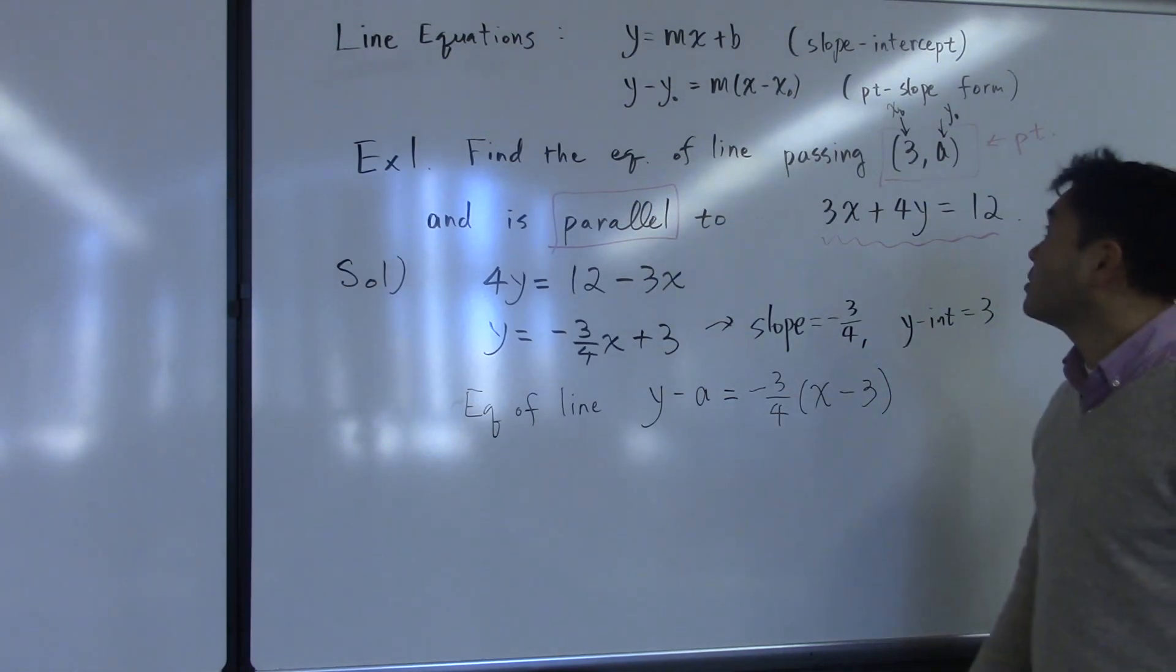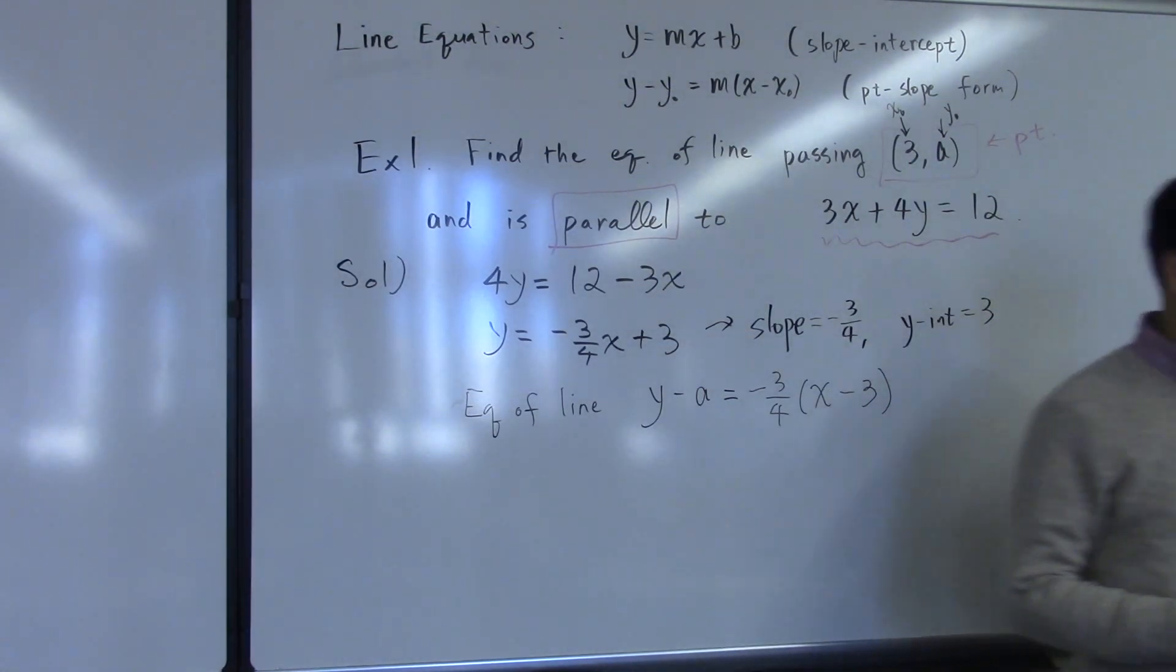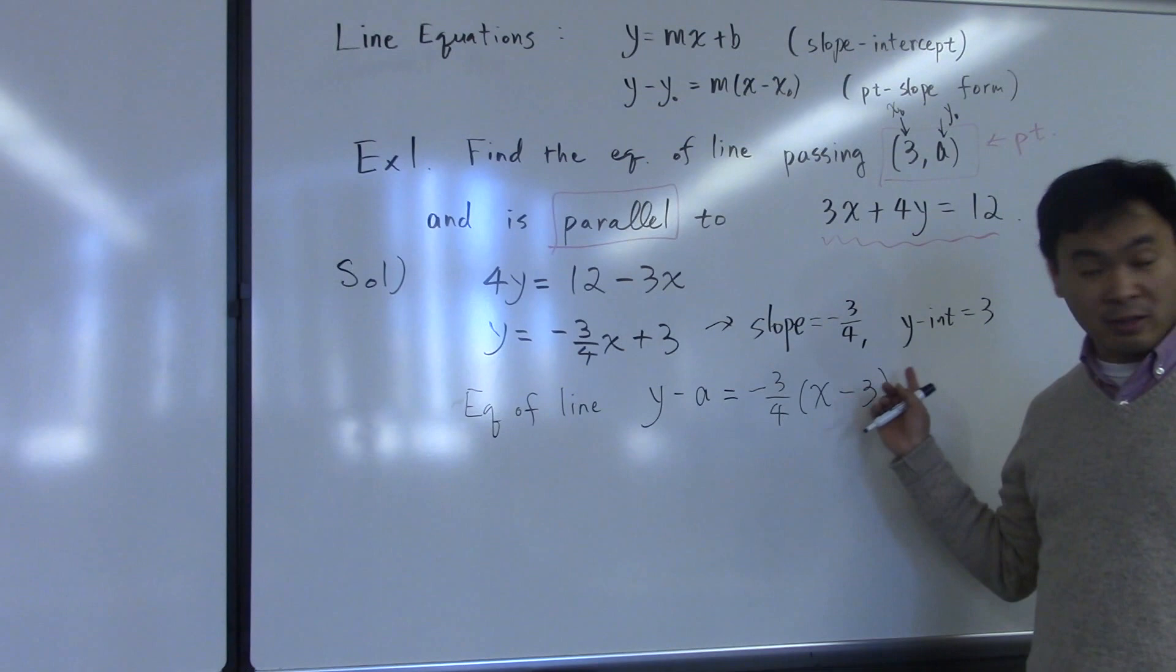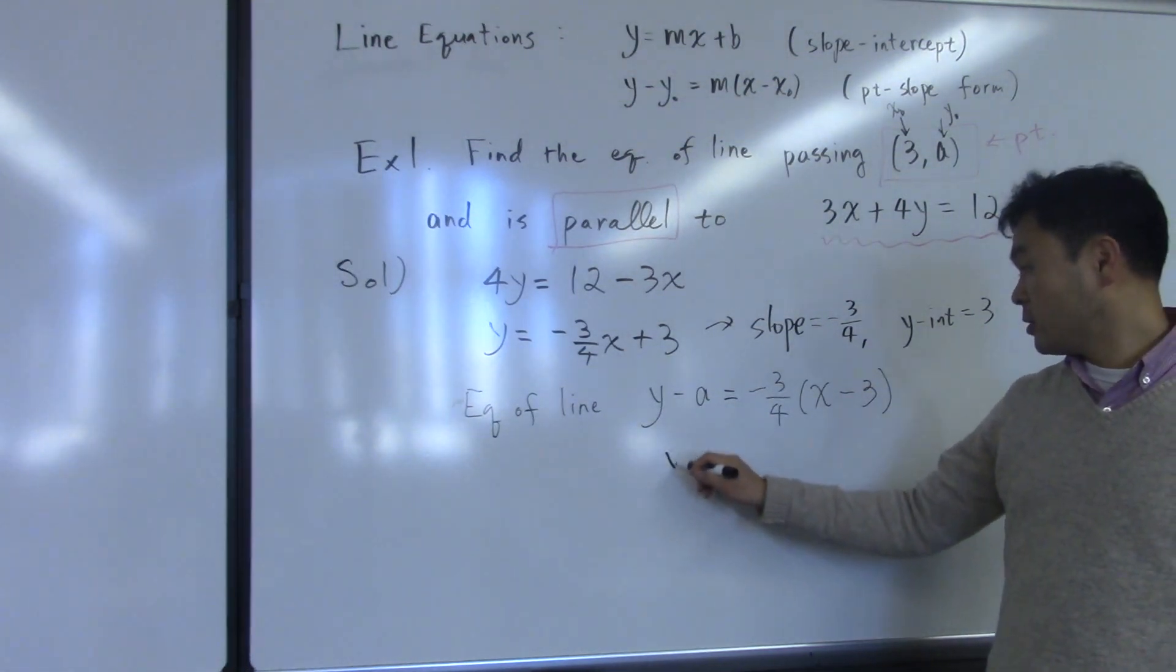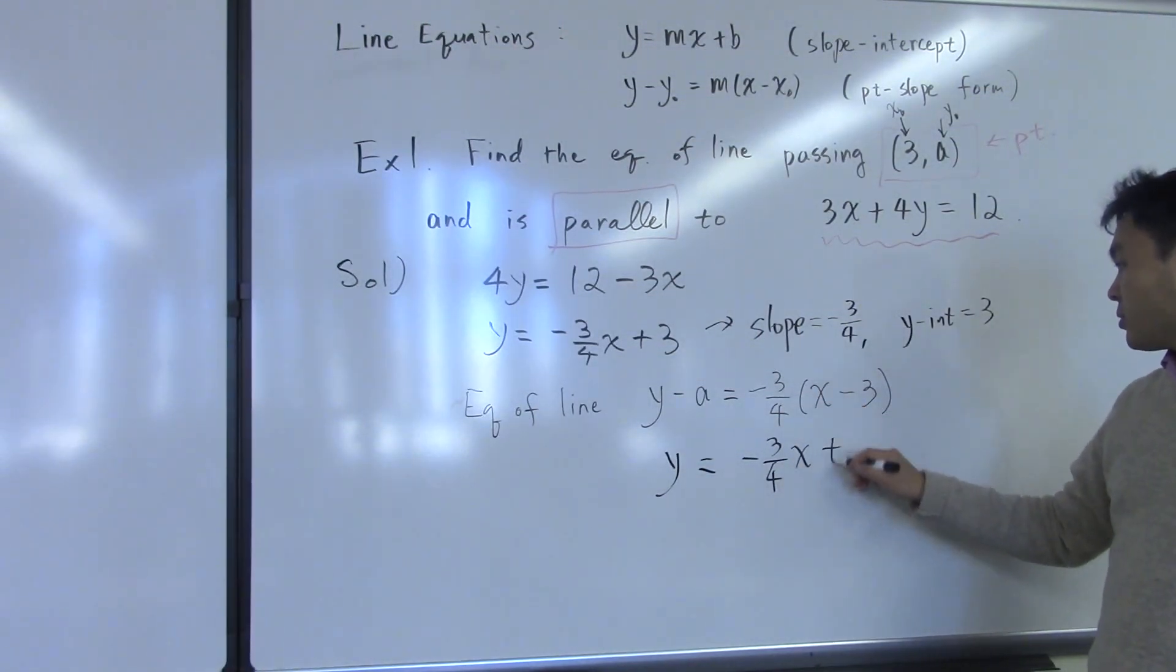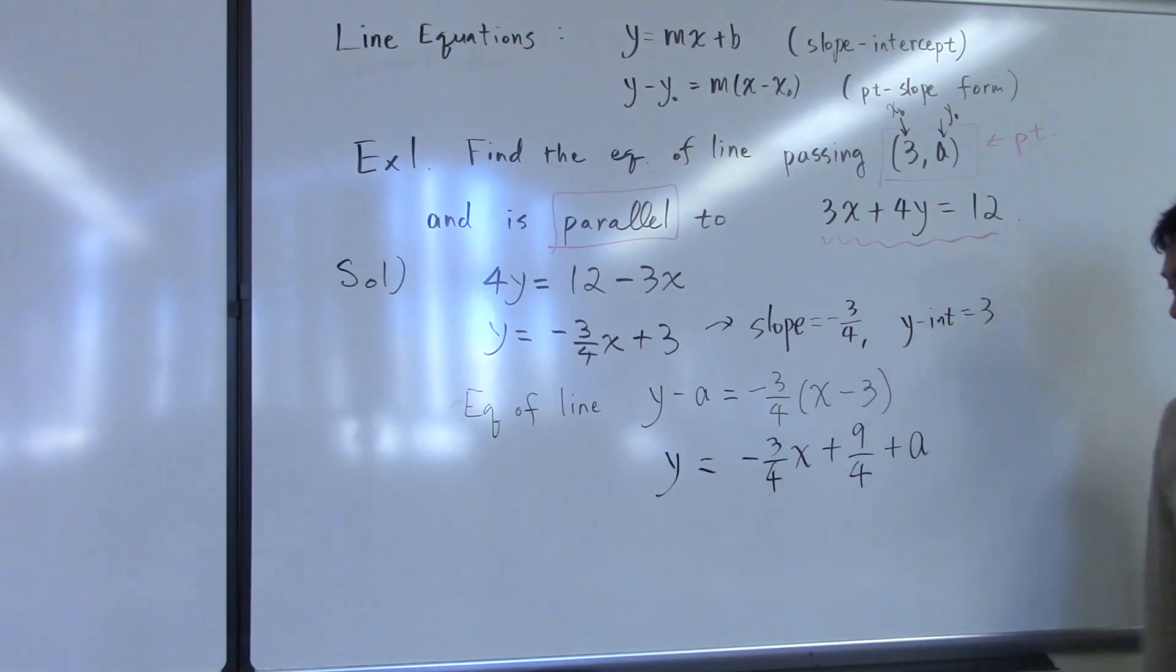In case the question asks you to find the line equation in the slope-intercept form, then you have to further simplify this by solving for y. So that becomes y equals negative 3 over 4x plus 9 over 4 plus a. So that's the answer.